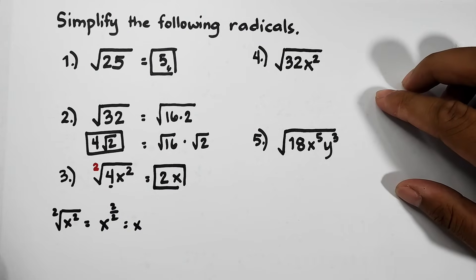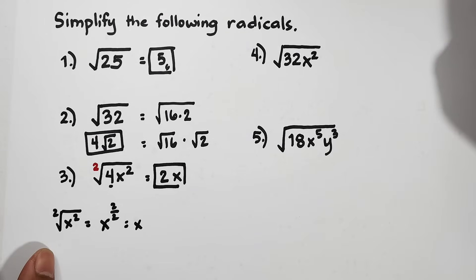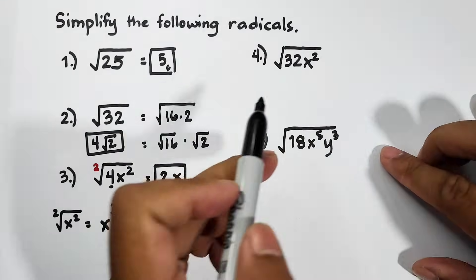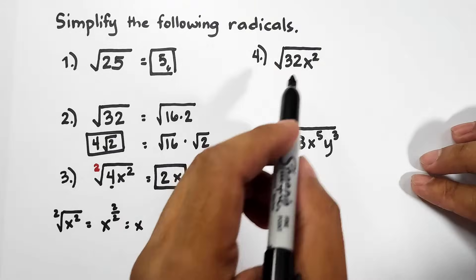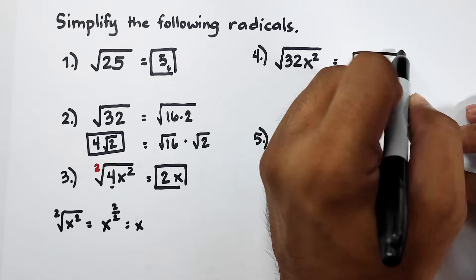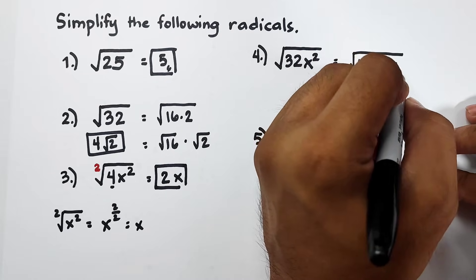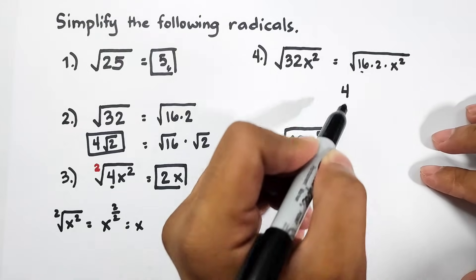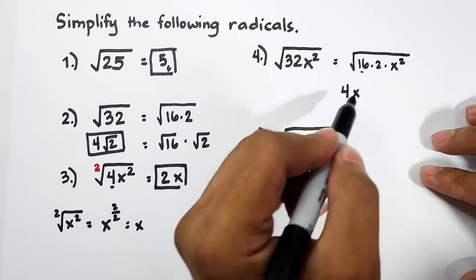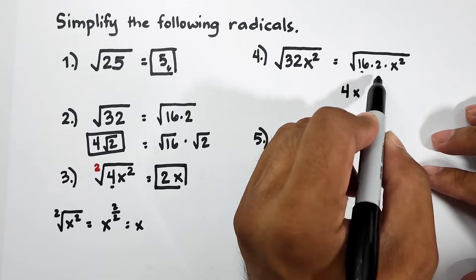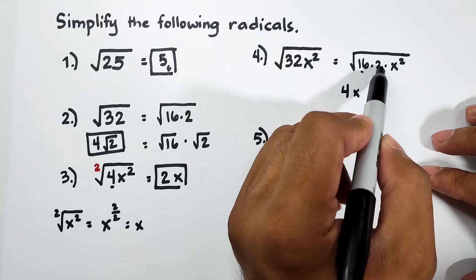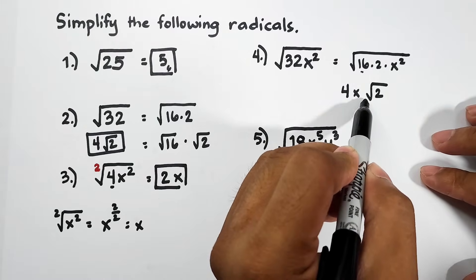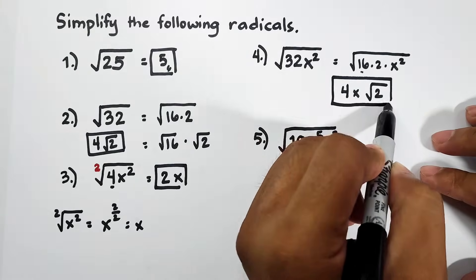Now let's move on with item number 4. As you can see, the radicand is a combination of a non-perfect square and a perfect square variable. We have the square root of 32x squared, which we factor out as the square root of 16 times 2 times x squared. The square root of 16 is 4, put it outside; the square root of x squared is x; and since 2 is not a perfect square, it will remain inside the radical sign. So the answer is 4x√2.